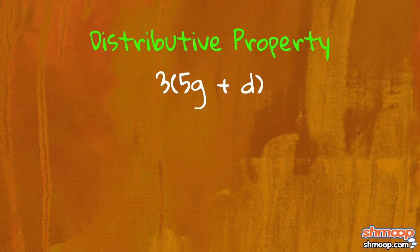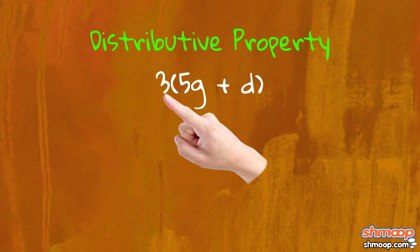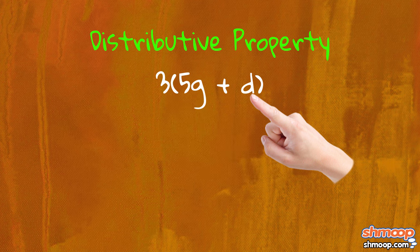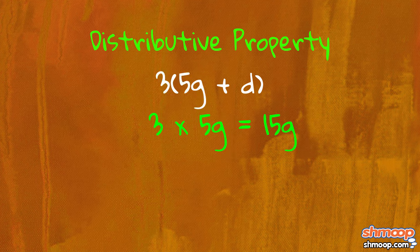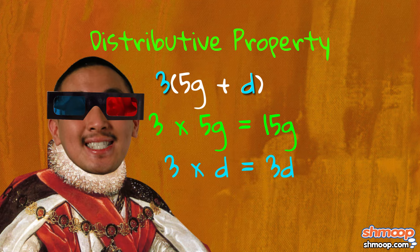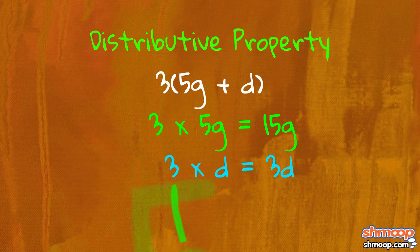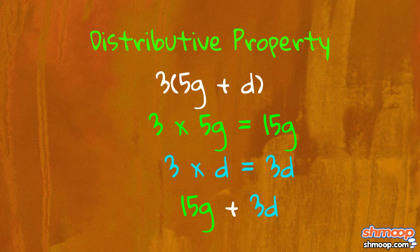To simplify this expression, we can use the distributive property. In other words, whatever is on the outside of the parentheses, we can multiply by each term on the inside of the parentheses. We get three times five G equals fifteen G, and three times one D equals three D. So we can rewrite the expression as fifteen G plus three D.